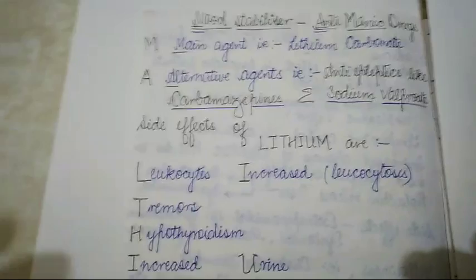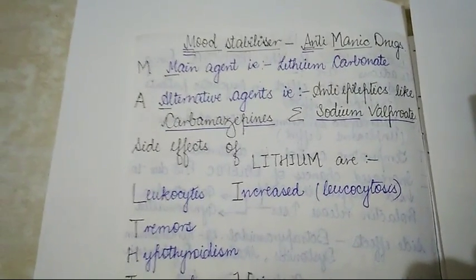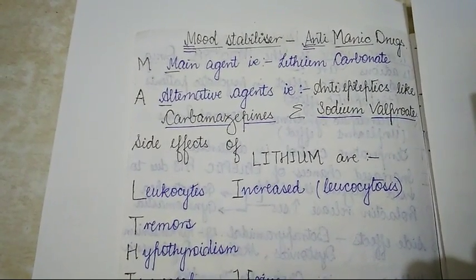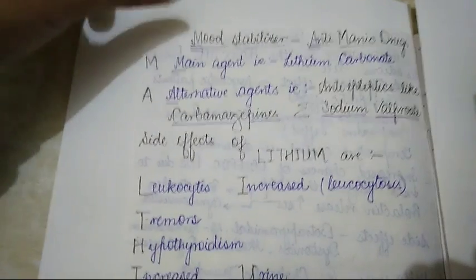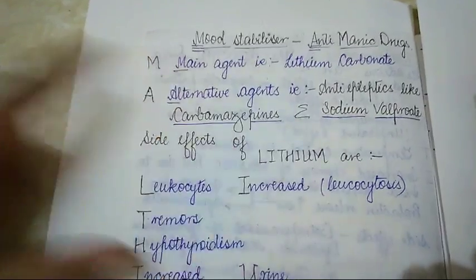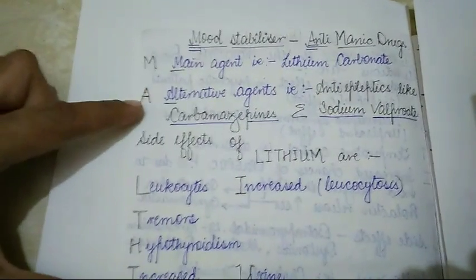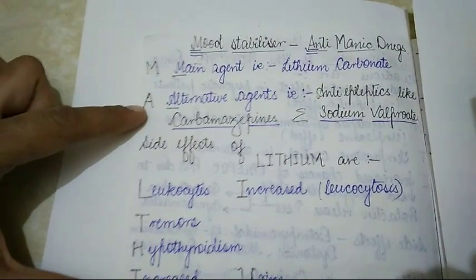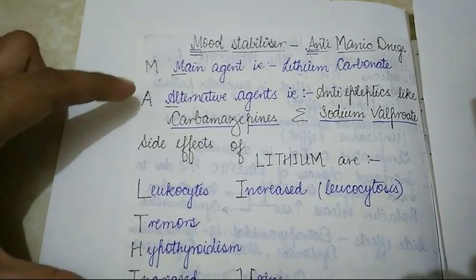The mnemonic or short trick I have made for anti-manic drugs is just by looking at the initials of mood: M for mood and A for anti-manic. So if we just remember, the mnemonic for anti-manic drugs is M and A.